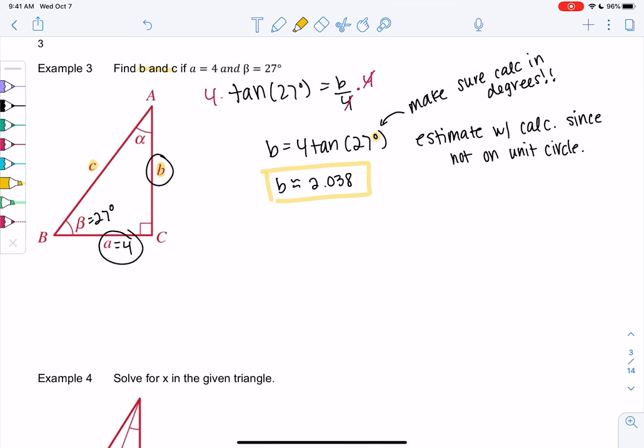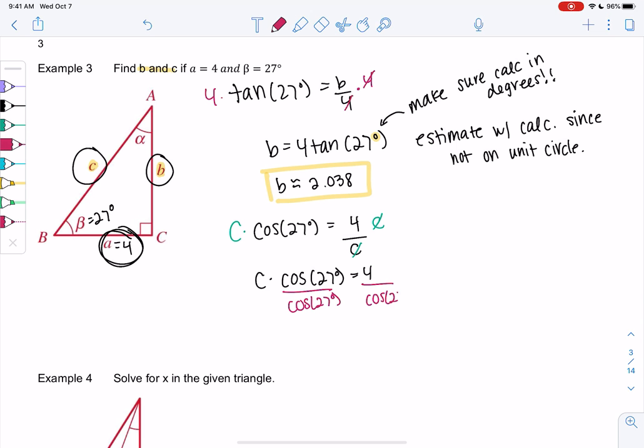All right, let's check out how to find C. I think I'll do cosine, since I have adjacent and hypotenuse. So cosine of 27 will be adjacent, 4 over C. We'll multiply by C. And then we can divide by cosine of 27.